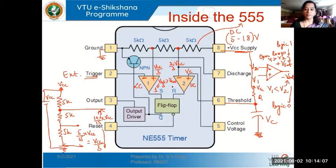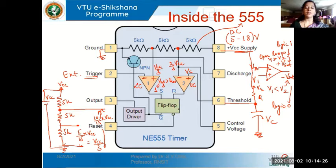These are the basic elements — the three 5k resistor potential divider and the two comparators — present within the 555 timer IC. The outputs of these comparators are taken as inputs to an SR flip-flop. The S input comes from the lower comparator and the R input comes from the upper comparator.